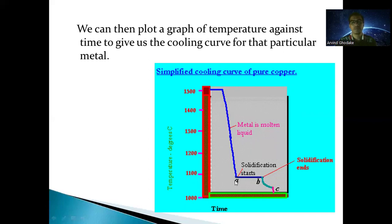Solidification starting means the first liquid droplets convert into solid — nuclei of solid are formed, and further growth of those nuclei occurs. Clusters of nuclei form and the crystal structure develops. In region A-B, there is a liquid plus solid state. At point A, solidification starts with less solid and more liquid. As time progresses from A to B, at point B the solidification ends — the last liquid droplet converts into solid.